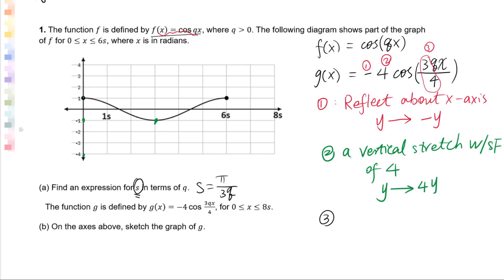Third step: A horizontal stretch with a scale factor of 4/3. Remember, inside is a liar, which means the x-coordinate in f(x) times 4/3.